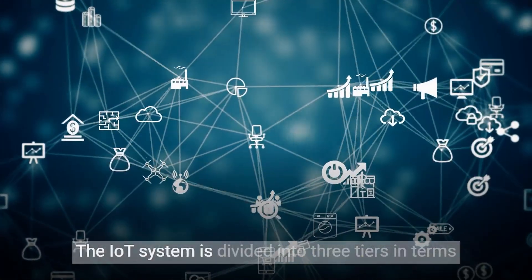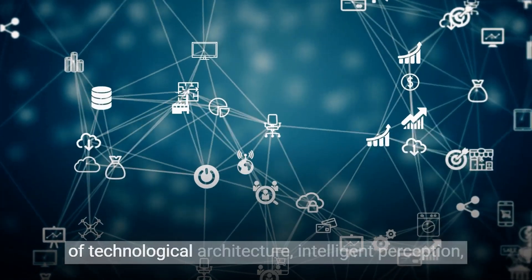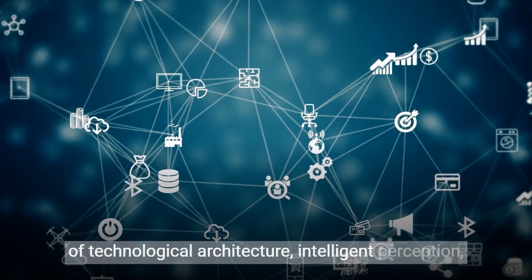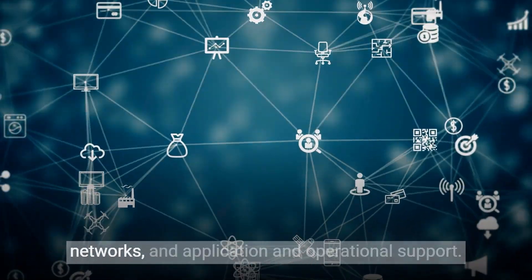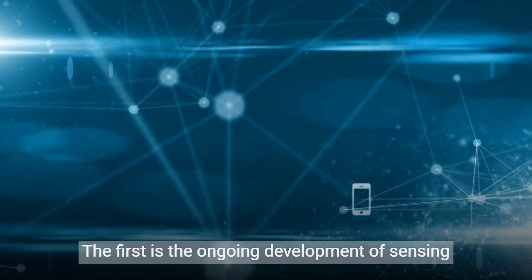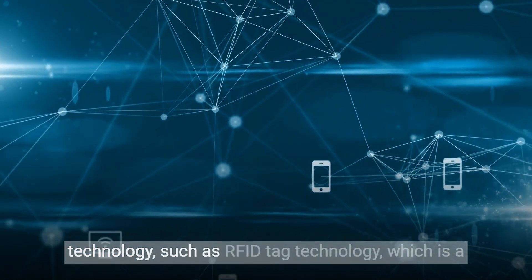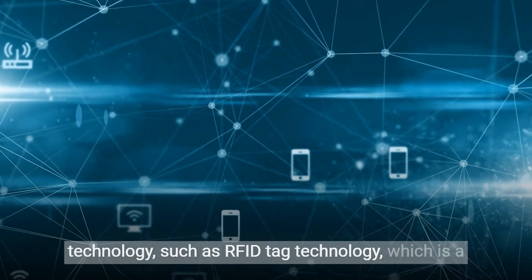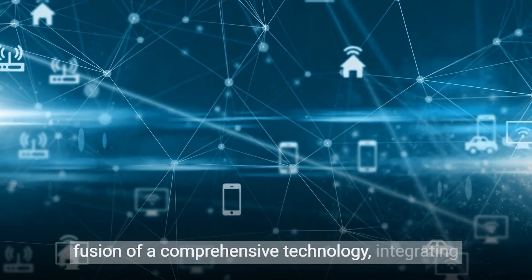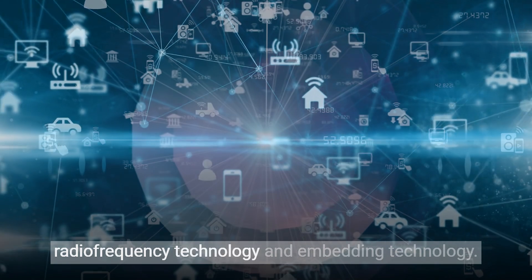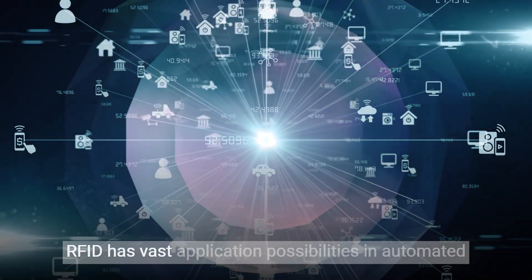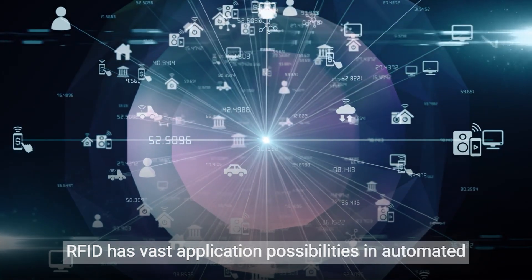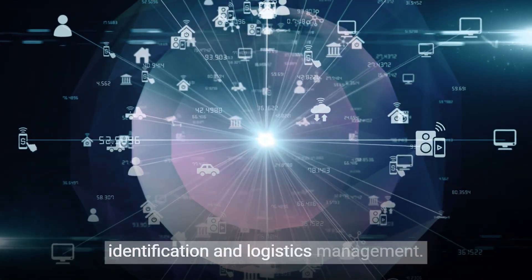The IoT system is divided into three tiers in terms of technological architecture: intelligent perception and sensing systems, wireless communication networks, and application and operational support. The first is the ongoing development of sensing technology, such as RFID-TAG technology, which is a fusion of a comprehensive technology, integrating radio frequency technology and embedding technology. RFID has vast application possibilities in automated identification and logistics management.